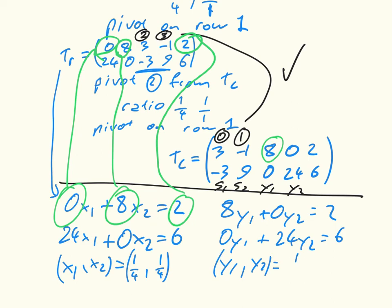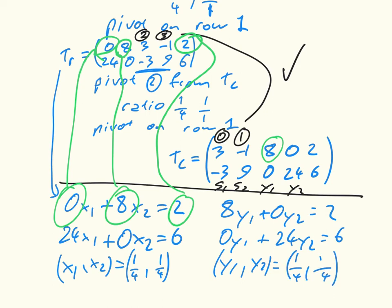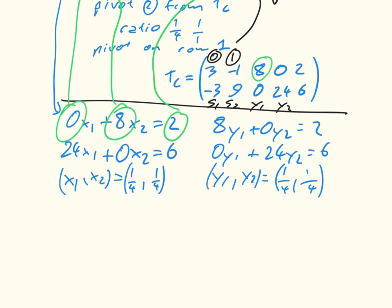And then the final step is normalize. And we get that the Nash equilibrium is equal to a half, a half, and a half, a half. And that is, in essence, the Lemke-Howson algorithm.